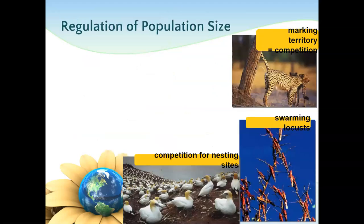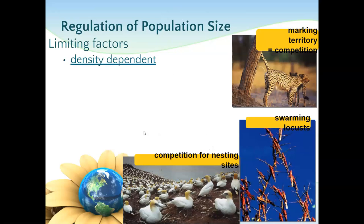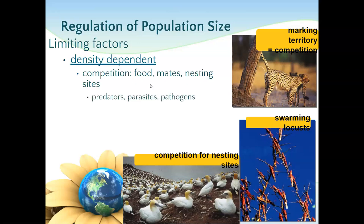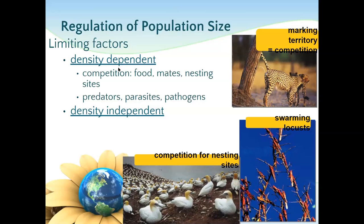Things that can regulate your population size: you have limiting factors — density-dependent factors depend on how clumped the group is. You're more likely to get COVID if you're clumped together — that's a density-dependent factor. Illness, parasites, food, mates, nesting sites — anything relying on competition. The more there are in a given area, the less homes, mates, and food are available. Predators, parasites, and pathogens are more easily transferred if organisms are clumped together.